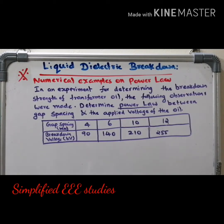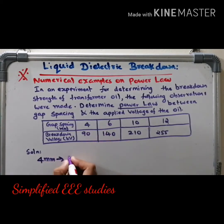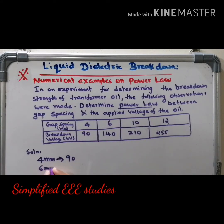This is a transformer oil. They have taken it and applied particular voltage at a particular distance. For example, at the gap spacing of 4 mm, the breakdown voltage is 90 kV. When you maintain the gap distance at 6 mm, the obtained value of the breakdown voltage is 140 kV.